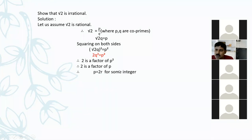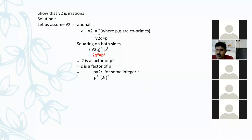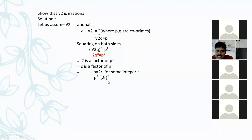Since 2 is a factor of p, p can be written as a multiple of 2, so p equals 2r for some integer r. Now I will square both sides again. You may ask: why square again? In the first step we squared to remove the square root, but here we need p² to substitute into equation one. So squaring p = 2r gives p² = 4r².